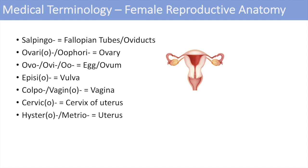The next one is hystero or metrio, which denotes the uterus. You can think of hysterectomy — the removal of the uterus — or endometrium, the inner lining of the uterus, or myometrium, the muscle of the uterus. All of these denote the uterus. And the next one is hymeno, which denotes the hymen.